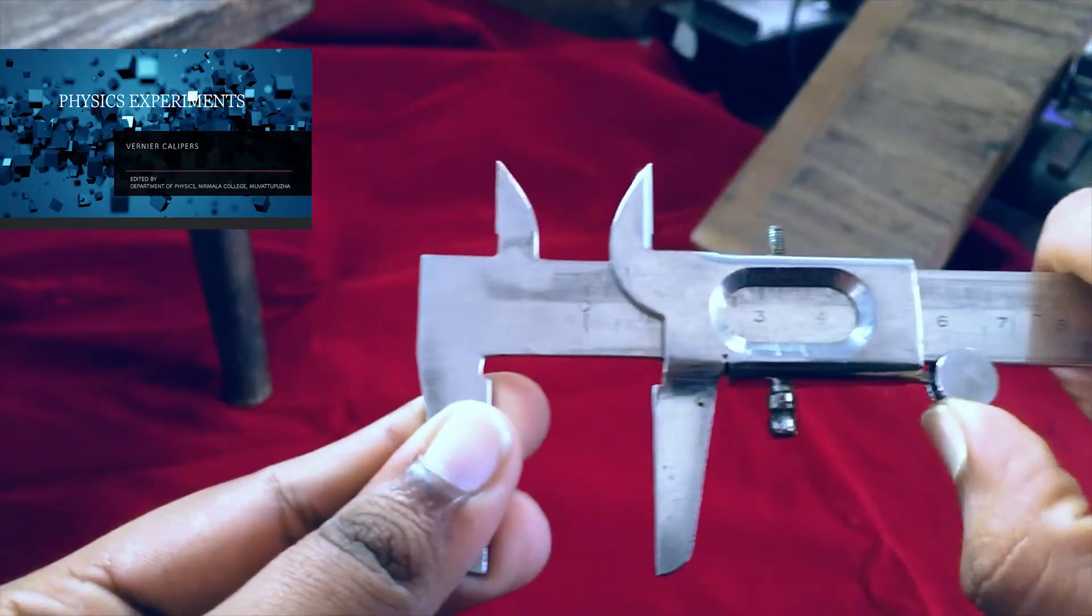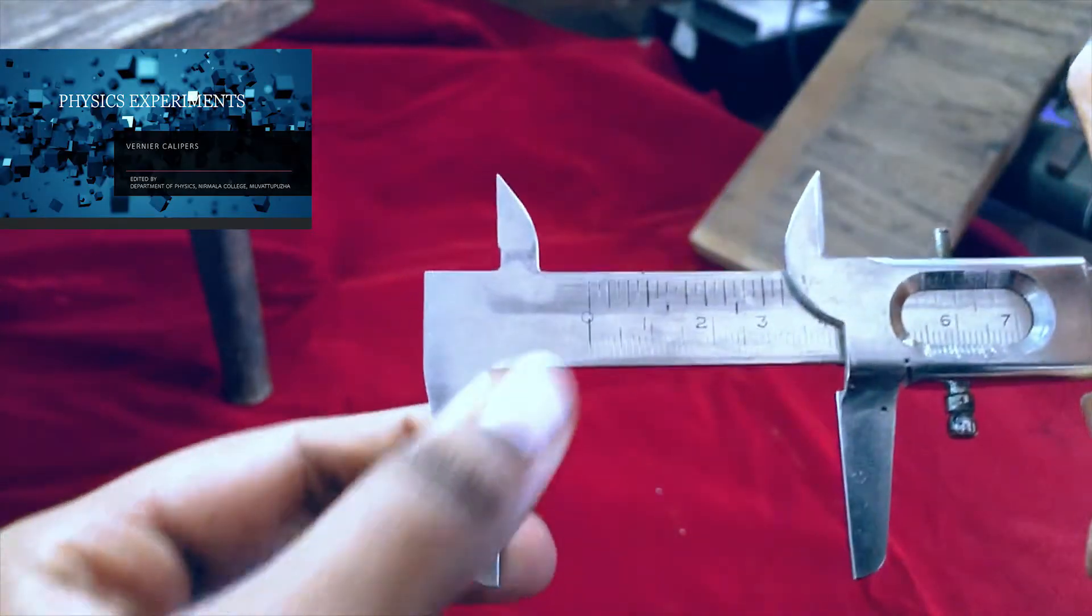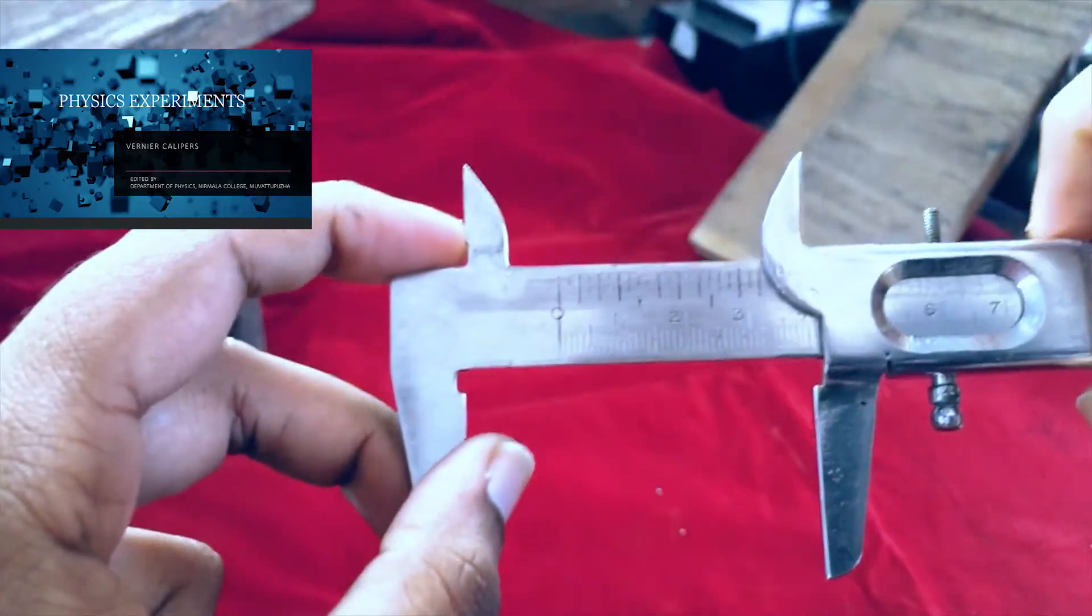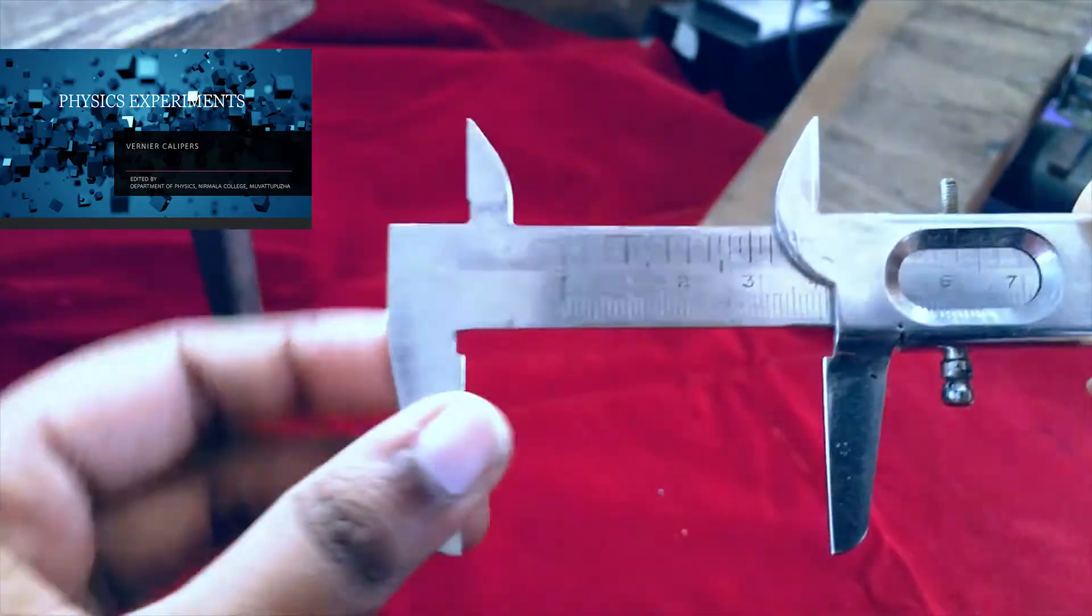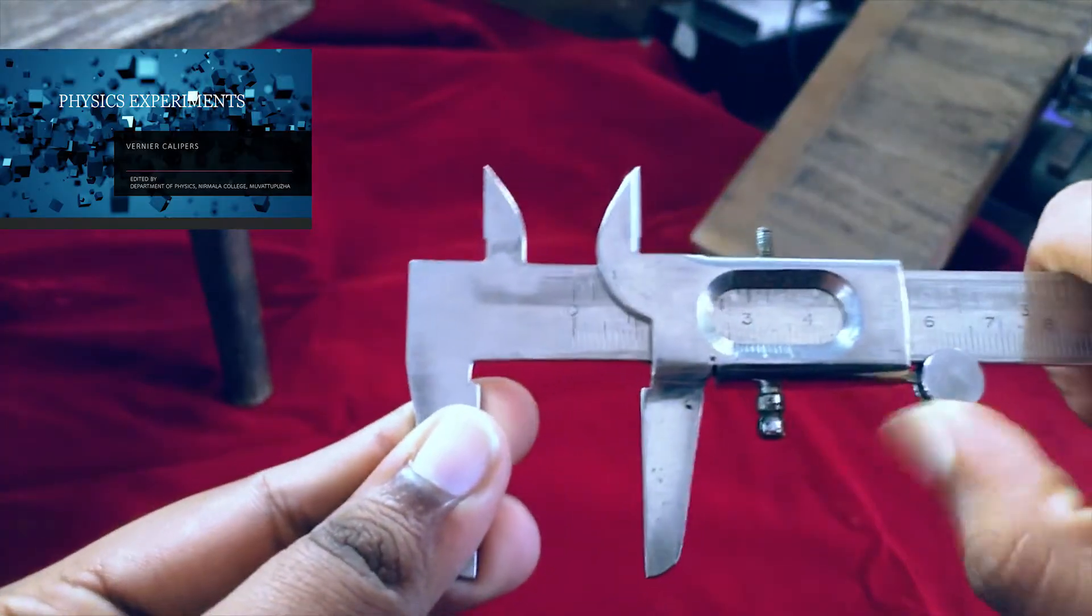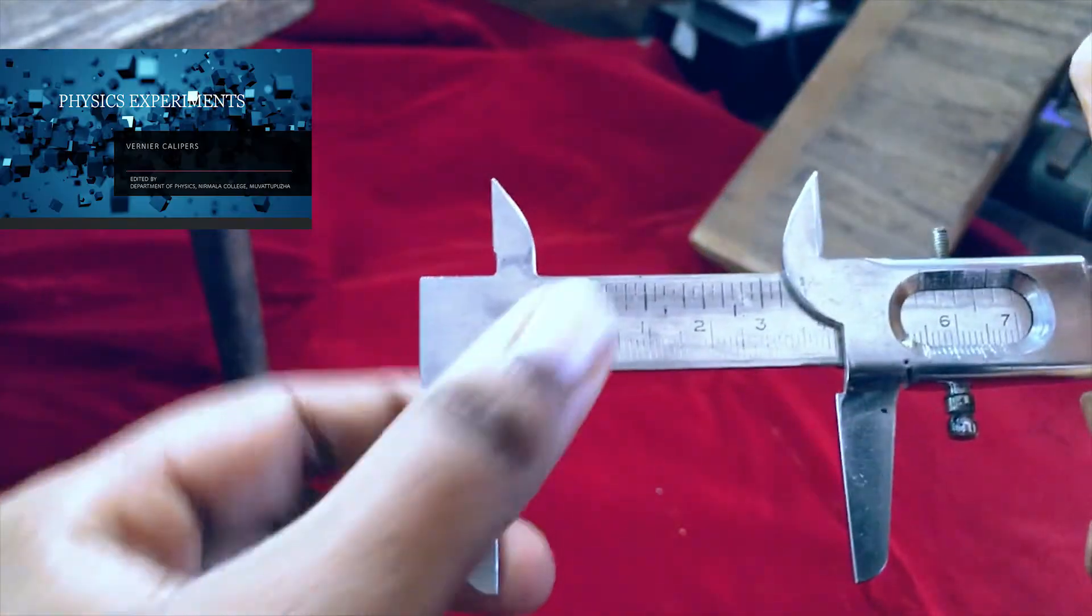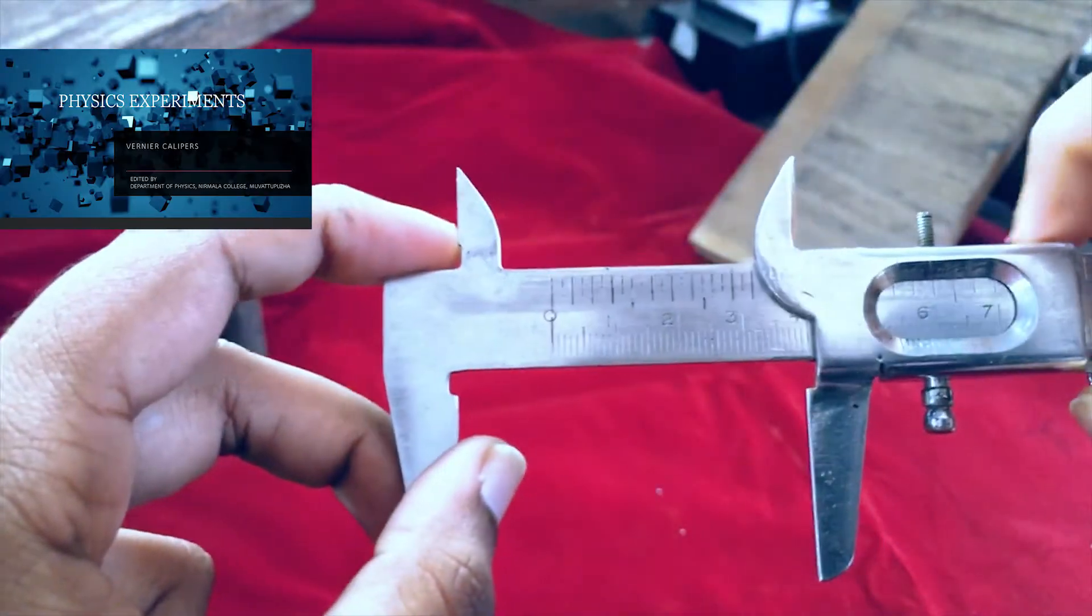We are going to learn how to do Vernier Calipers experiment. We are going to measure a cylinder's length and diameter using the instrument Vernier Calipers.